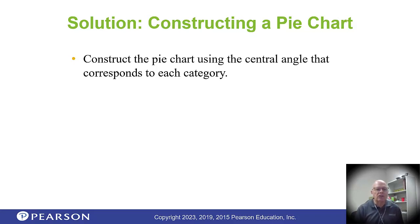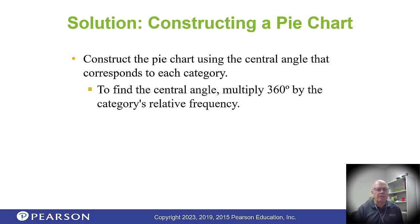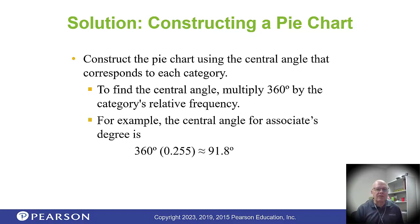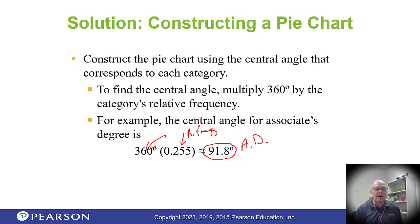To make the pie chart, use the central angle: multiply 360 degrees by the relative frequency. For example, the central angle for the associate's degree is the relative frequency multiplied by 360 degrees — that tells you how large to make that section. Then follow up with the other degree types and you'll have a complete pie chart.